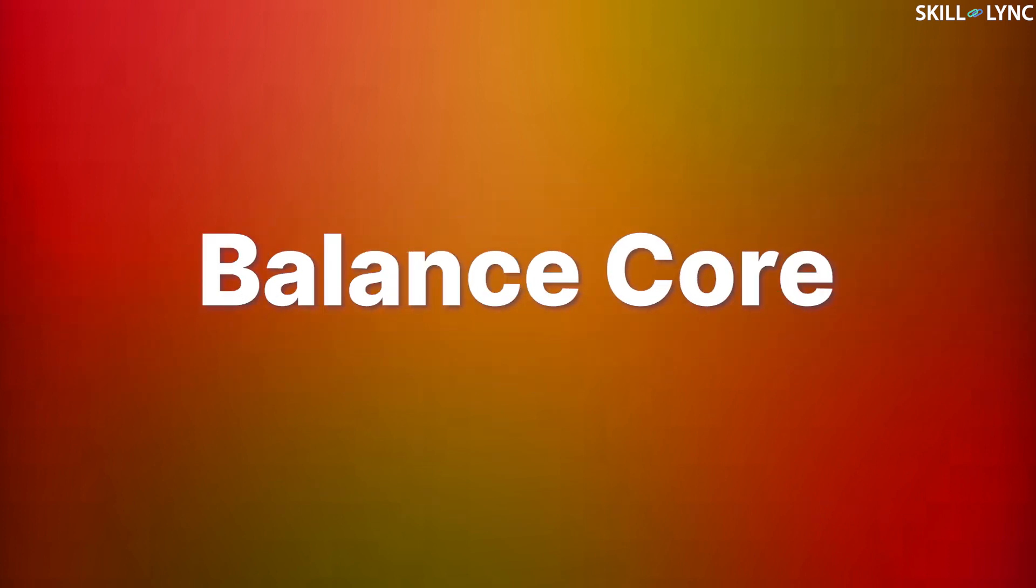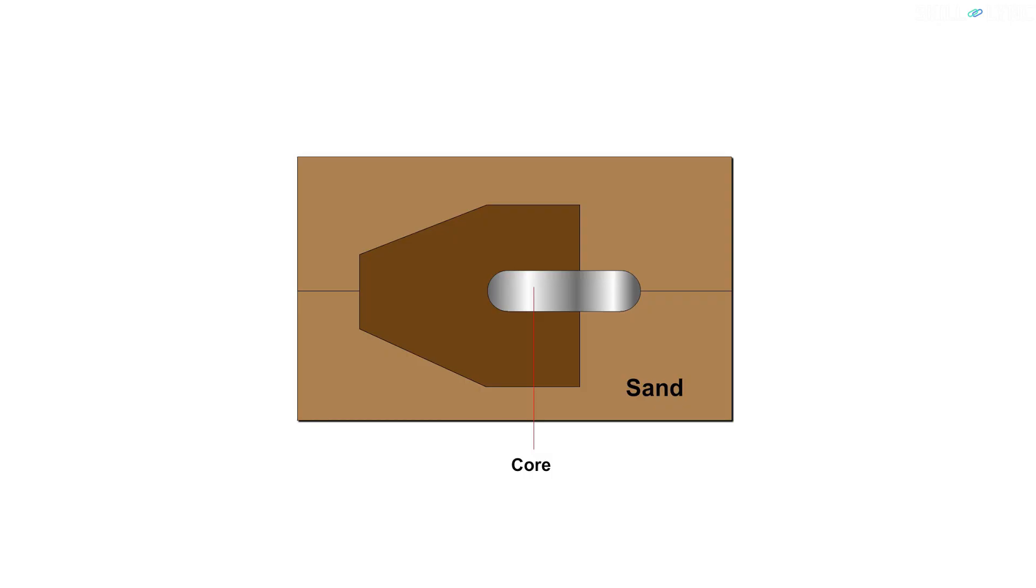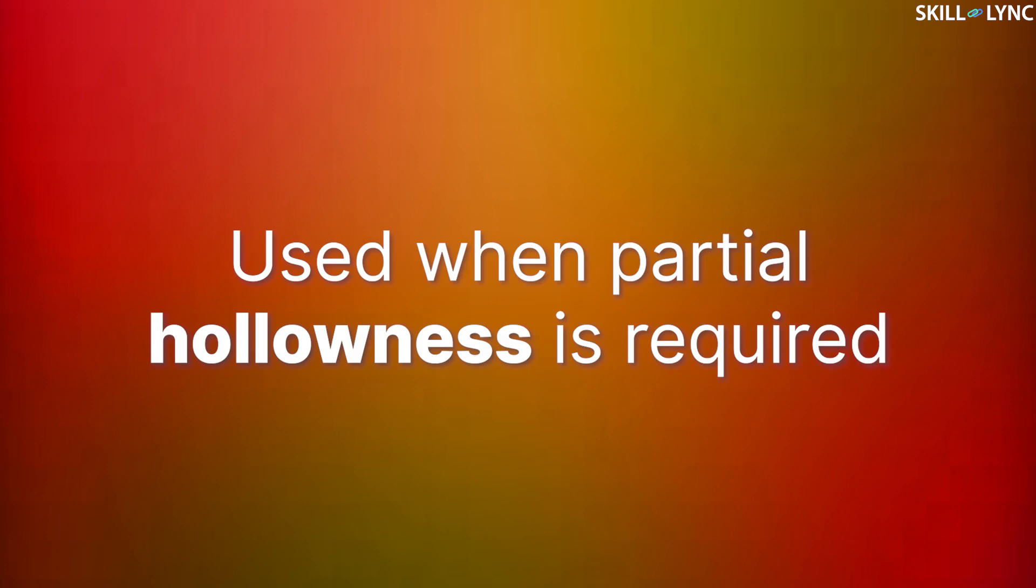Now let's move on to balance core. Balance cores are the ones which are supported and balanced from only one end. Only one core print is provided to support this core. Balanced cores are used for casting when partial hollowness is required.